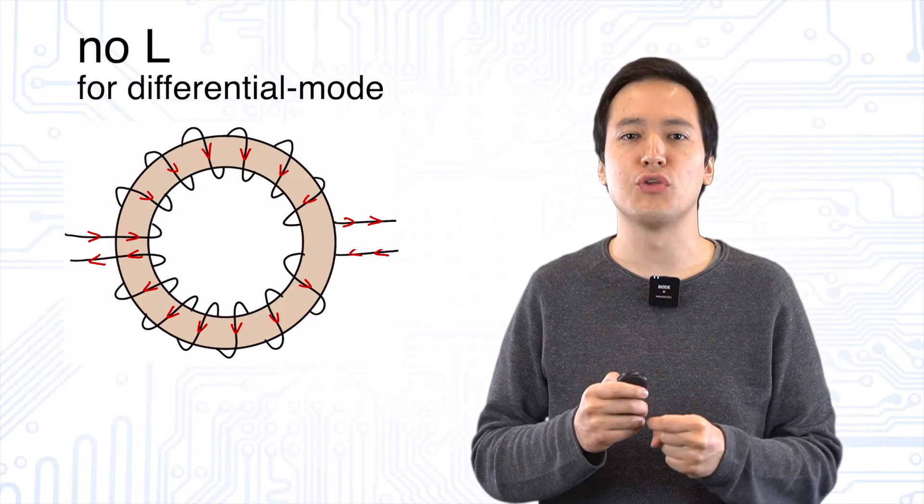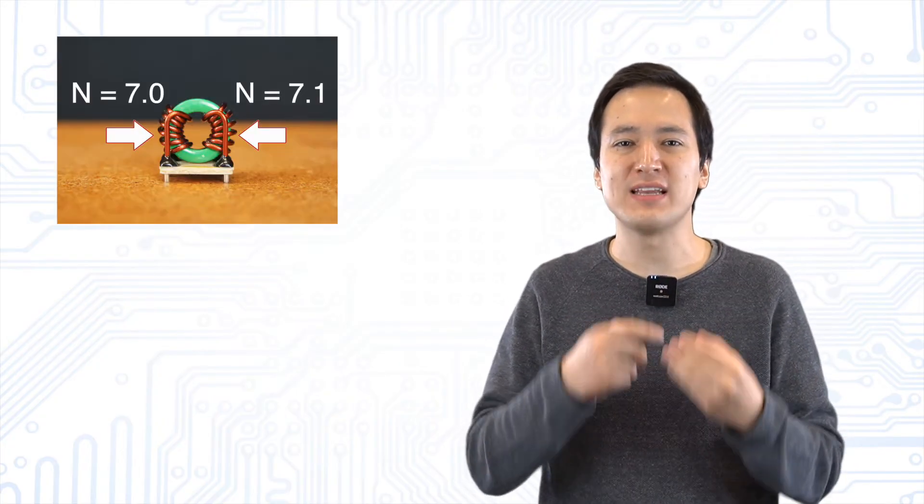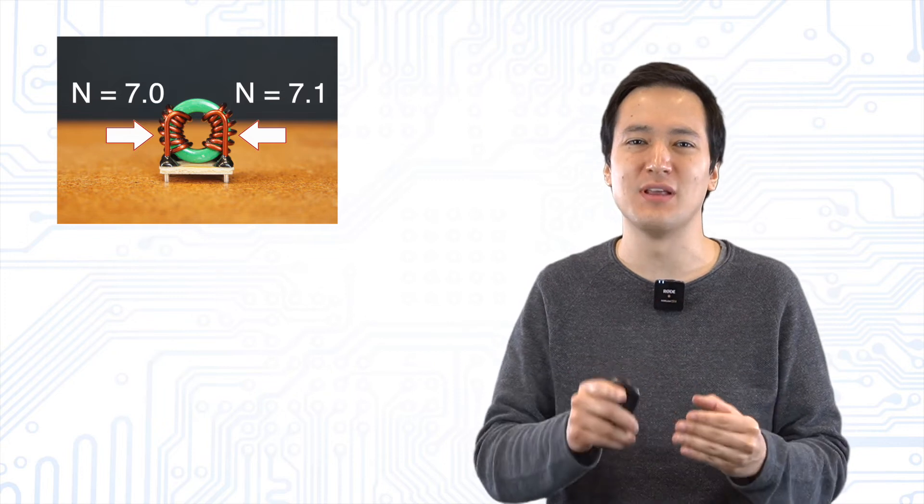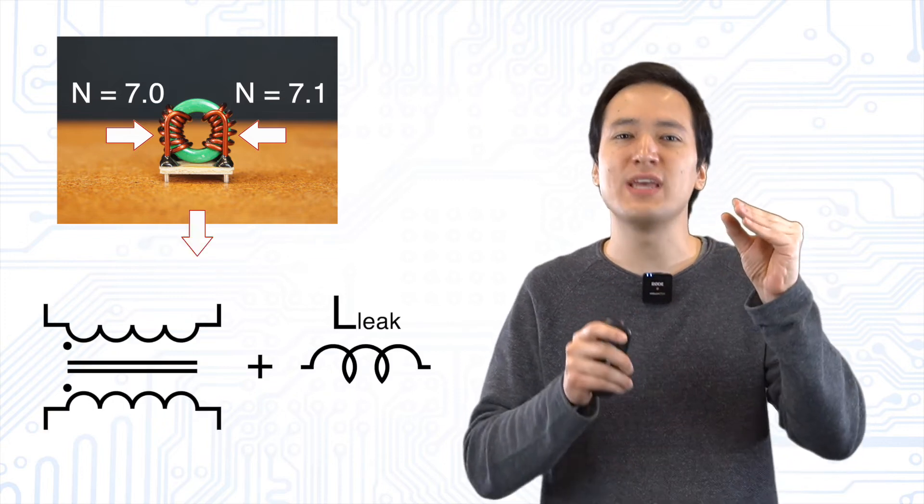But this is not the whole truth because the world isn't ideal. In fact both windings are not 100% equal. Thus a small stray induction shows up.